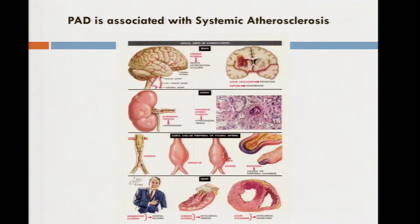This is why we need to recognize the disease and institute proper treatment. Patients with peripheral arterial disease have a form of atherosclerosis that is disseminated and aggressive. They typically have disease in other circulations — coronary disease, carotid artery disease, mesenteric arterial disease, possibly an aortic aneurysm — all of which can be associated with significant morbidity and mortality.